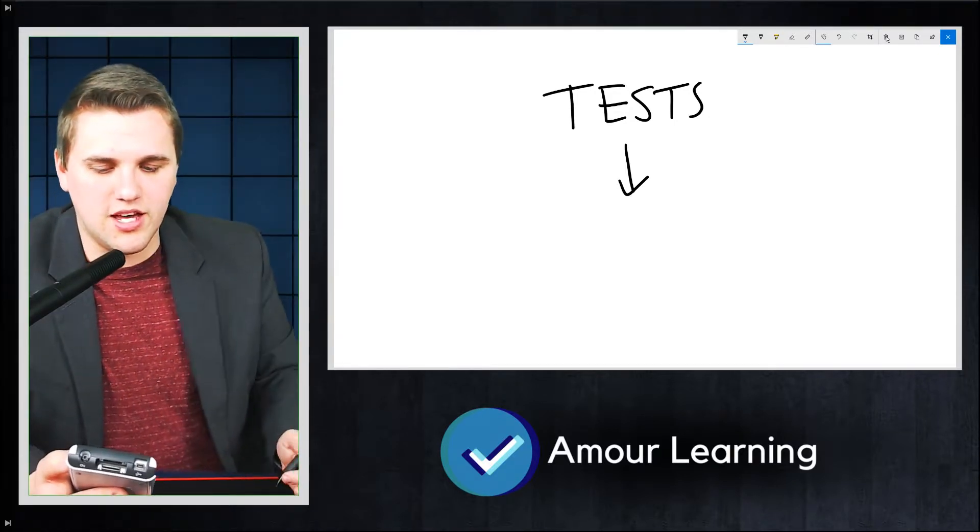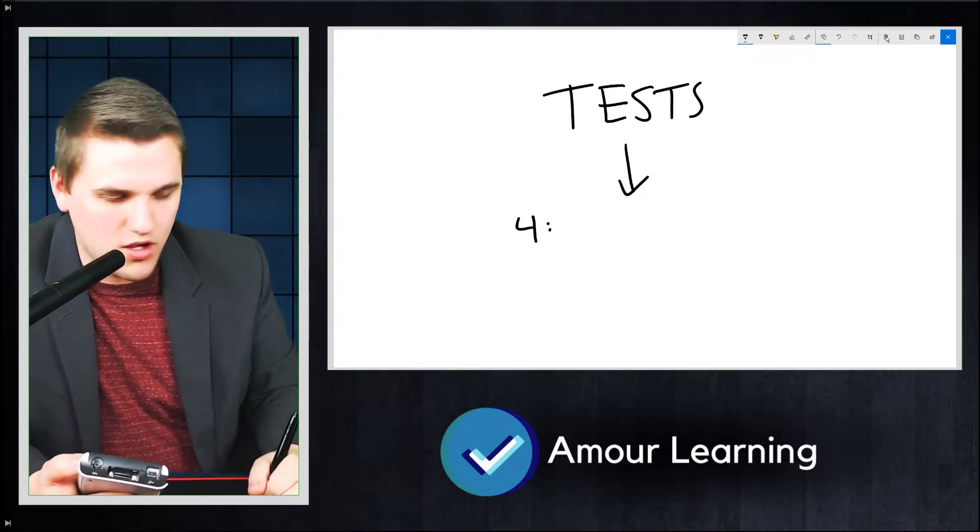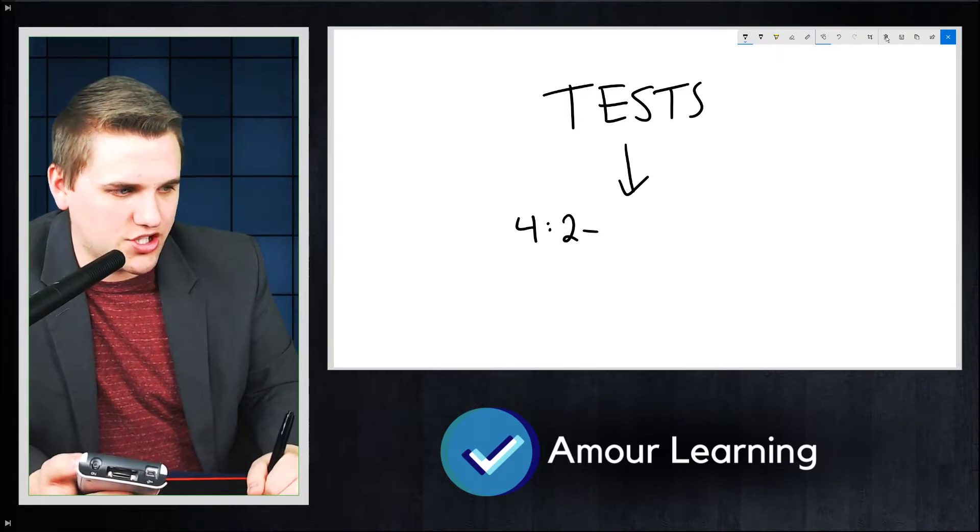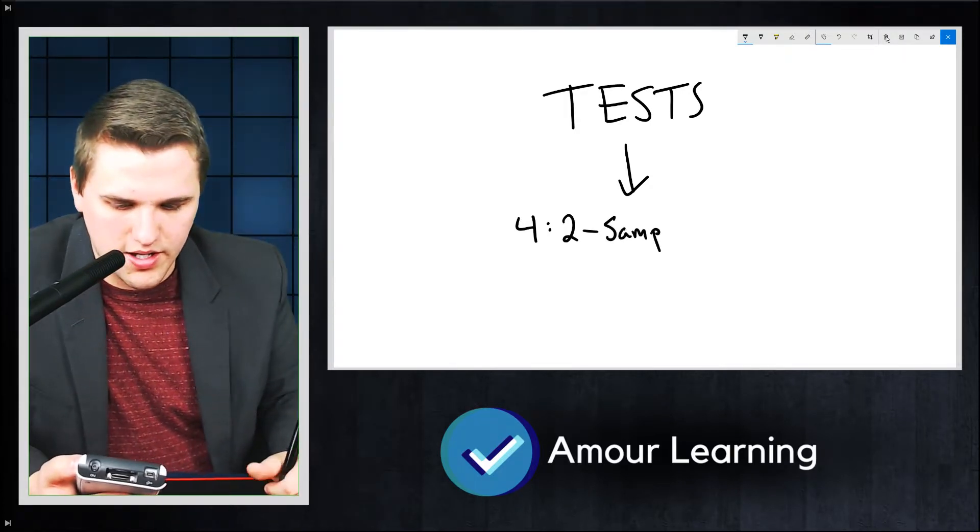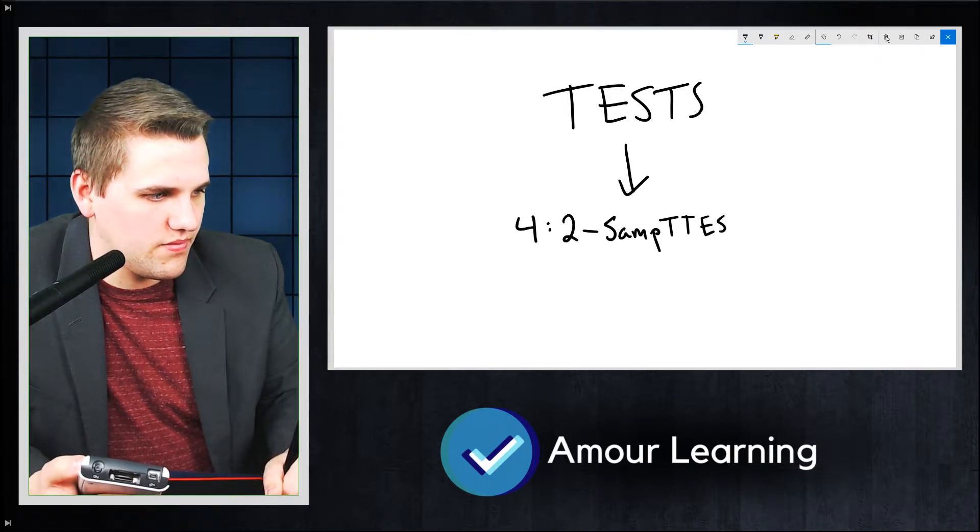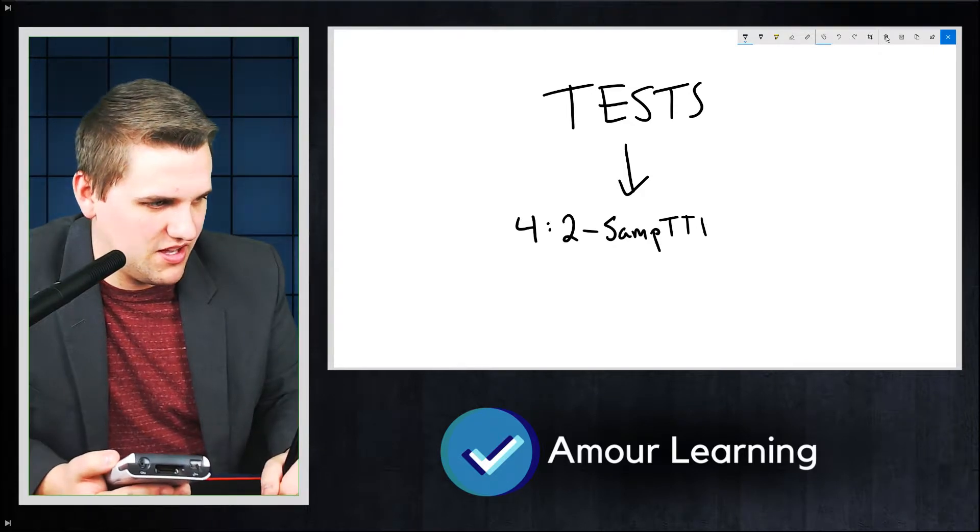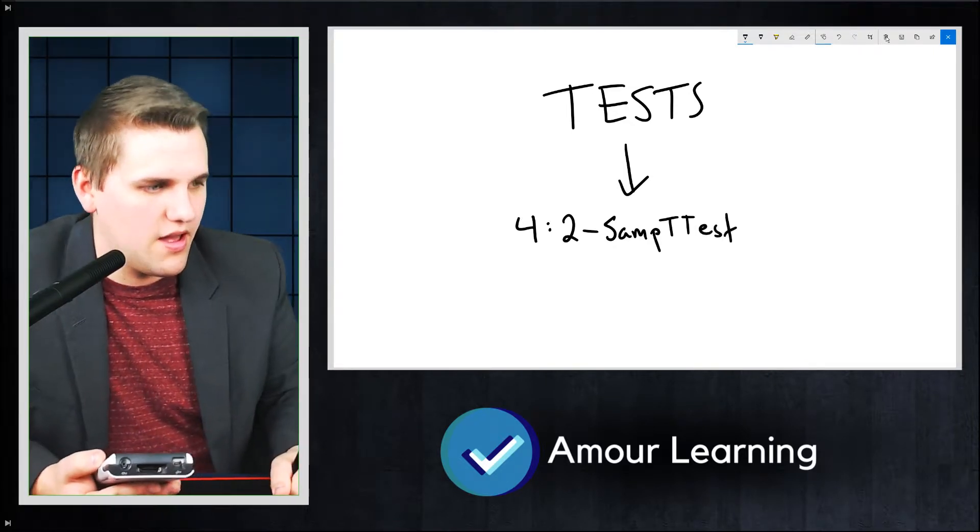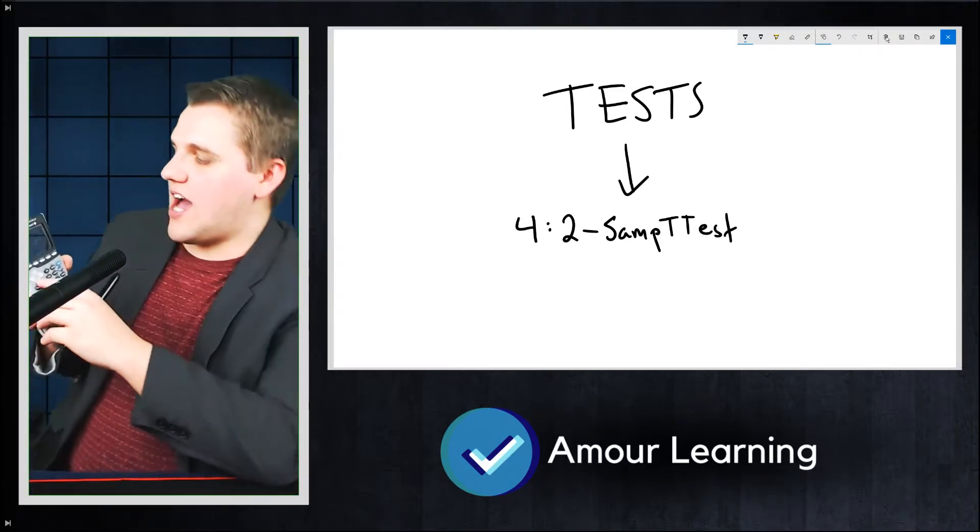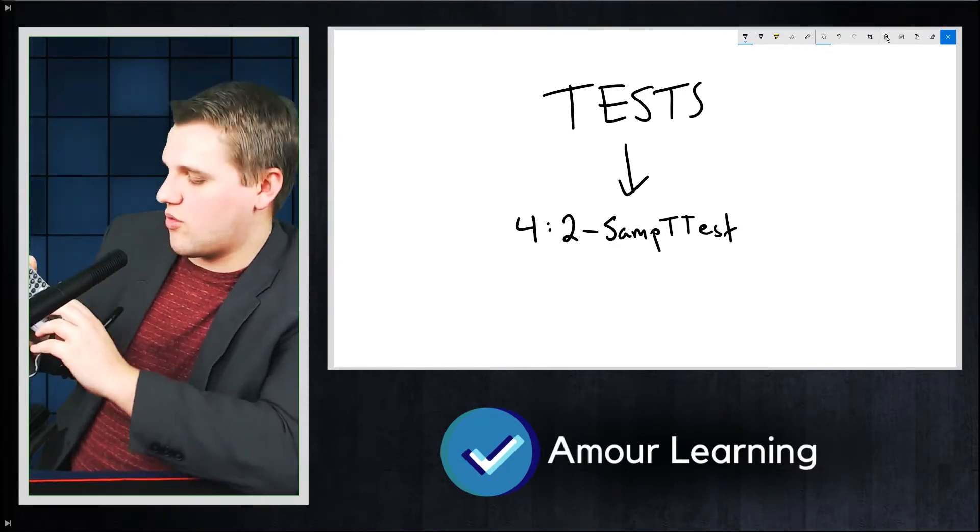And then the fourth one, it will say 4 colon 2-samp T test. And those will be lowercase. It should just be consistent here. You are going to scroll down until you highlight that number 4, or you can just hit 4 either way.